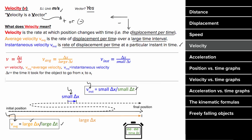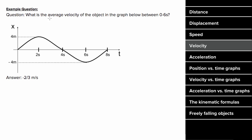What does an example problem for velocity look like? If you have this graph and wanted to determine the average velocity of the object between zero and six seconds, you'd have to remember that average velocity is displacement per time. Since the object starts at zero meters and ends at six seconds at negative four meters, the displacement is negative four, and the time it took to travel that displacement was six seconds, giving us an average velocity of negative two-thirds meters per second.